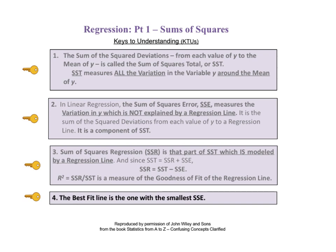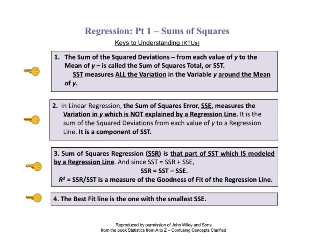The fourth and final KTU states, the best fit line is the one with the smallest SSE. And here, on one page, are the four keys to understanding how sums of squares are used in regression. You may wish to pause the video at this time to read them all together.